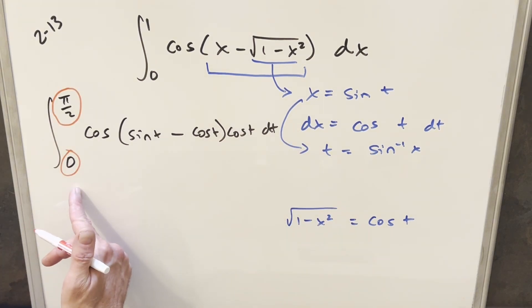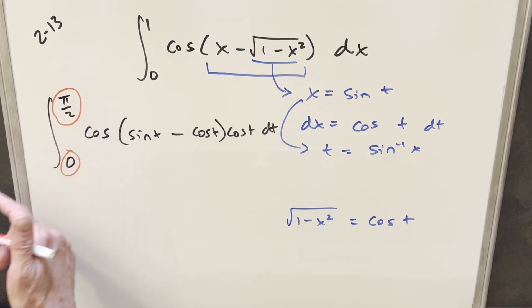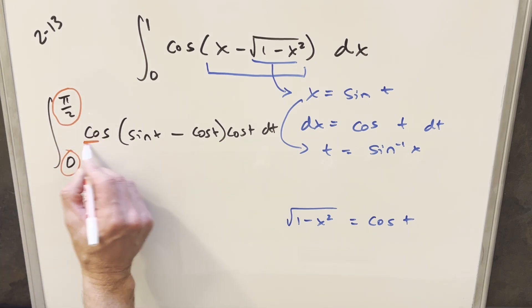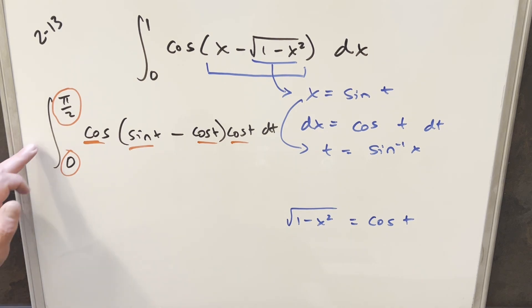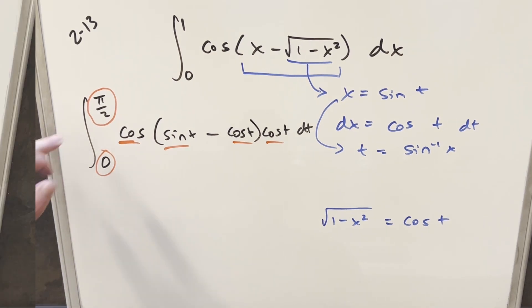So then what I want to notice here is that our bounds are set up pretty nice for us because from 0 to pi over 2, that's just the first quadrant, and we can do some good things with just cosines and sines here. So in order to use this, what I want to do from here is just use King's Principle on this.